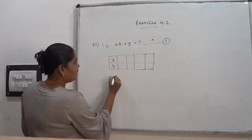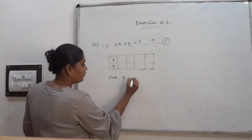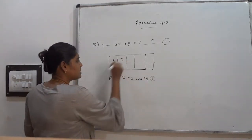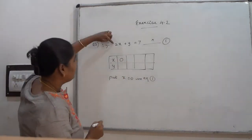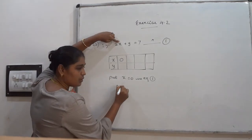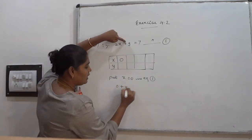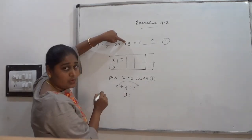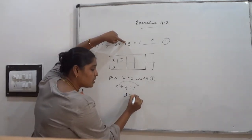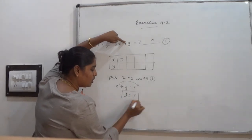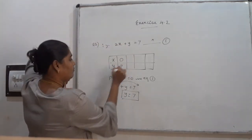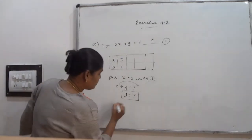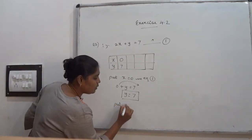Put x = 0 in equation number 1. Keeping x = 0: 2 × 0 = 0, so 0 + y = 7, which gives y = 7. When x = 0, y = 7.